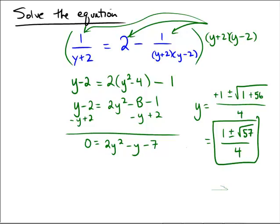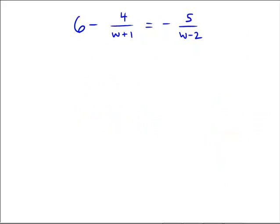I didn't intend for this one to turn out so messy — I might have transcribed one of my numbers incorrectly, but that looks like the answer we're getting. So why don't you try this one on your own: 6 minus 4 over w plus 1 equals negative 5 over w minus 2.